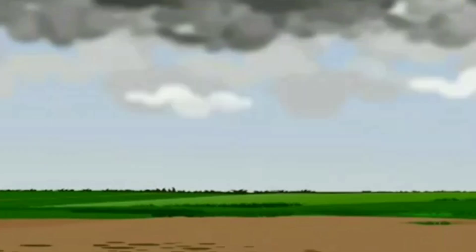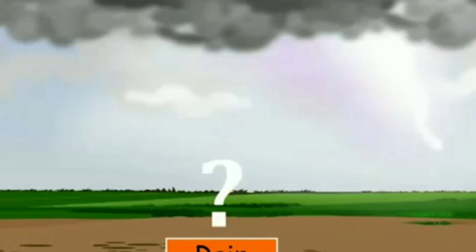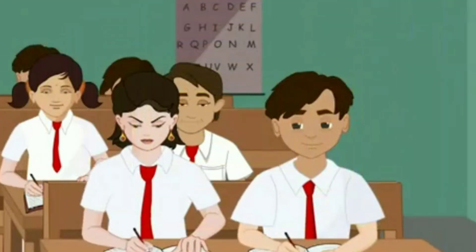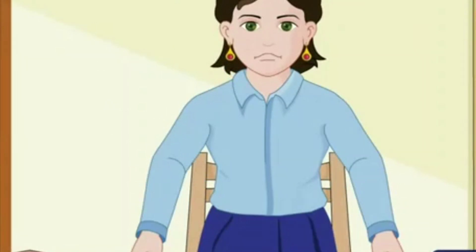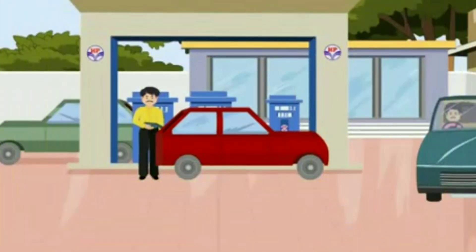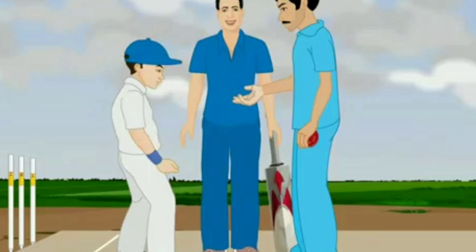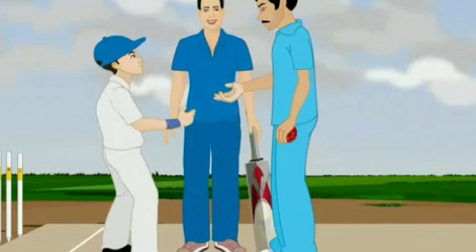In the first example, probably rain means it may rain or may not rain today. We are predicting rain today based on our past experience when it rained under similar conditions. Similarly, in the second example, he may pass or may fail. In the third case, Alina may stand first in the exam or may not. In the fourth case, the price of diesel may go up or may remain as it is. In the fifth case, India may win the toss in today's match or may not.